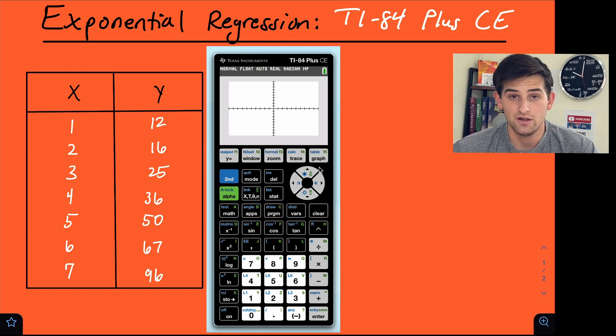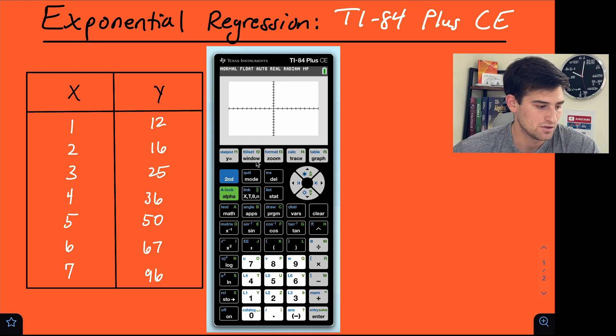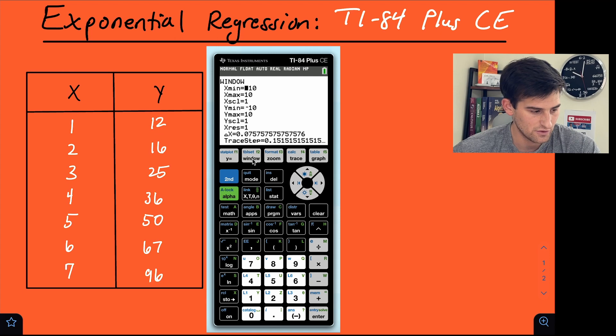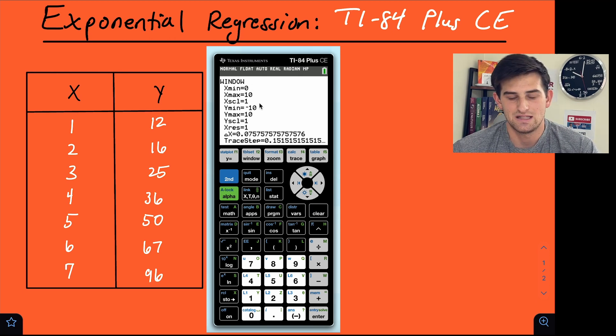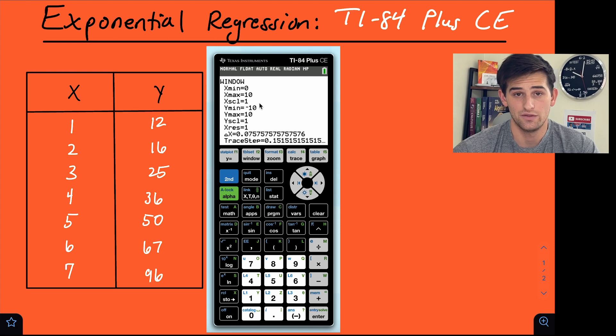So first of all, let's go to y equals and up here where it says plot one, this needs to be highlighted. So we go up to it, we hit enter and we hit graph and we still don't see anything. So we also need to adjust our window to make sure that our data points fit within the window that we see. So let's go to window.